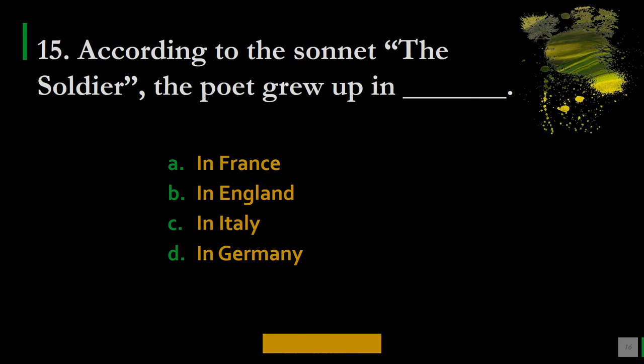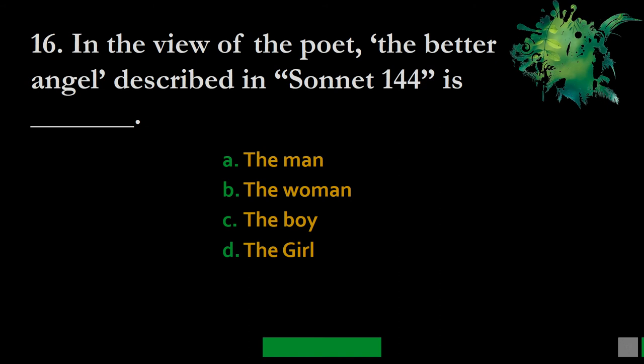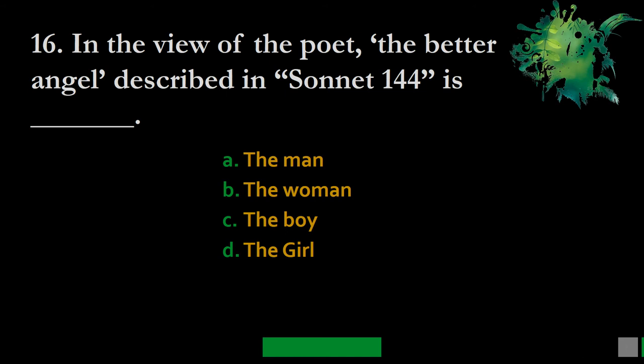Question 16: In the view of the poet, the better angel described in Sonnet 144 is — A. The man, B. The woman, C. The boy, D. The girl. This sonnet is composed by William Shakespeare. The correct option is A — Shakespeare described the man as the better angel in the sonnet.